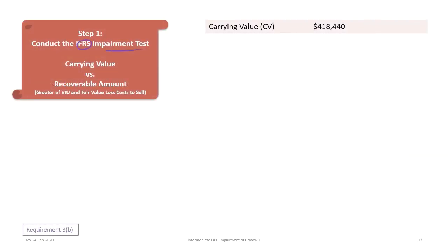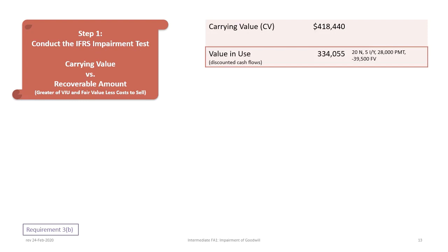The first step is to conduct an IFRS impairment test by comparing the carrying value to the recoverable amount. The recoverable amount is the greater of the value in use — the discounted cash flows — and the fair value less cost to sell. Our carrying value is $418,440. To determine value in use, we use: N = 20, I = 5%, annual payments of $28,000, and at the end of the useful life, disposal costs of 10% of fair value. This results in a present value of $334,055, which is the value in use.